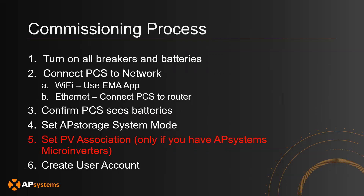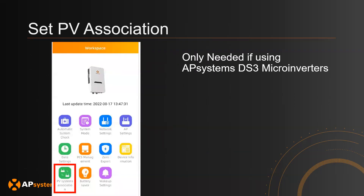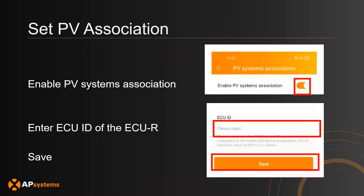Next, let's set the PV association. Note that this is only necessary if you have AP Systems microinverters. Go to Workspace and hit PV Systems Association. Hit the slider to enable PV Systems Association, enter the ECU ID of the ECUR managing the microinverters, and then hit Save.